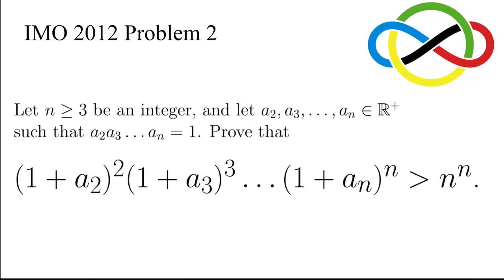Let's take a look at this problem taken from the International Mathematical Olympiad 2012. It says, let n be an integer that is at least 3, and let a₂, a₃ up to aₙ be positive real numbers, such that their product is 1.